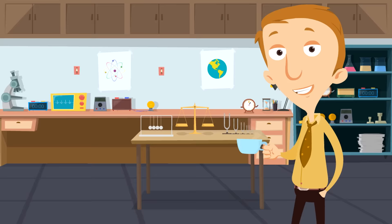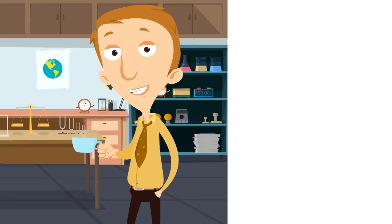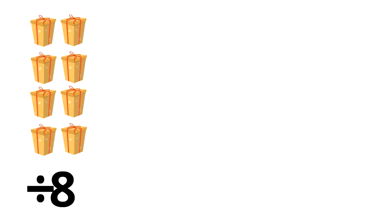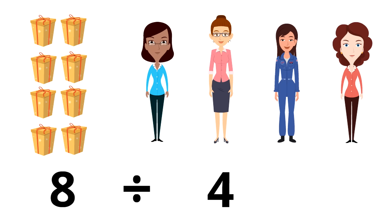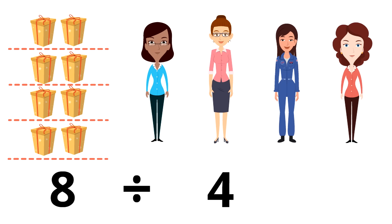Let's try another example of division. Let's say there are eight presents, and there are four women, and we want each of the women to get the same amount of presents as the other women because we want it to be fair. We are going to divide or split up eight by four. Let's split these presents up into four equal groups: one, two, three, four. How many presents does each woman get? Two — each woman gets two presents.